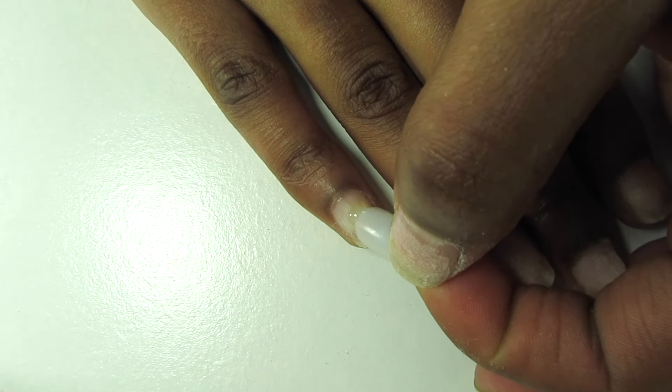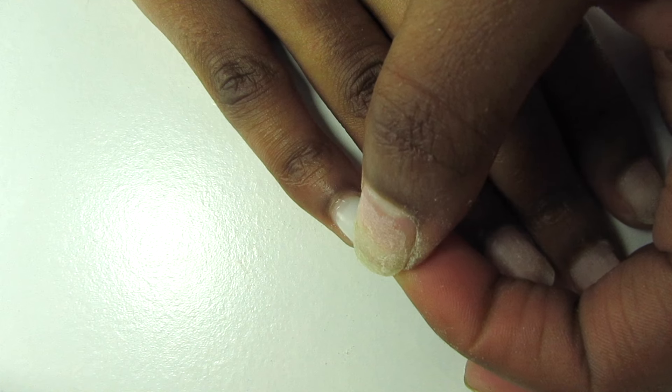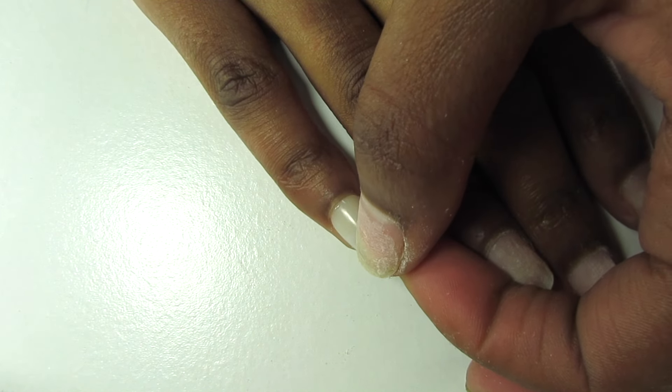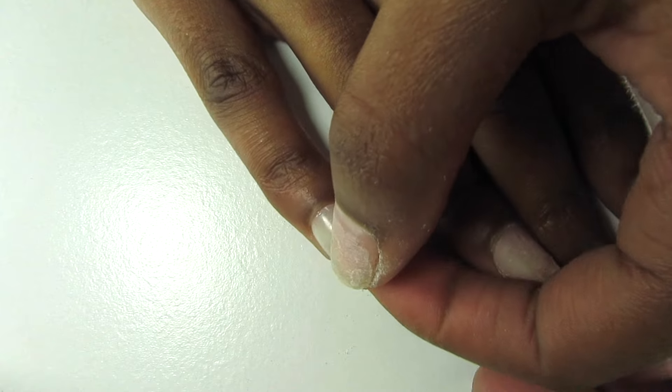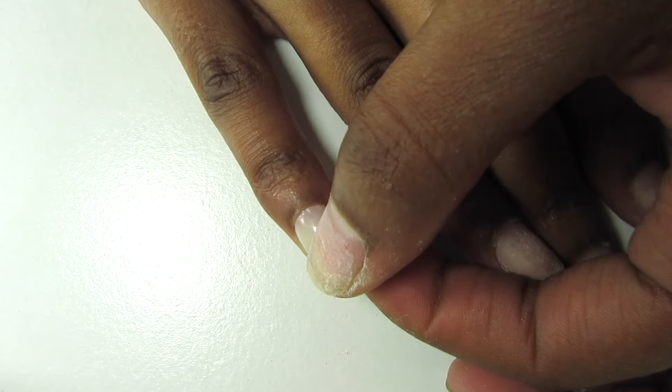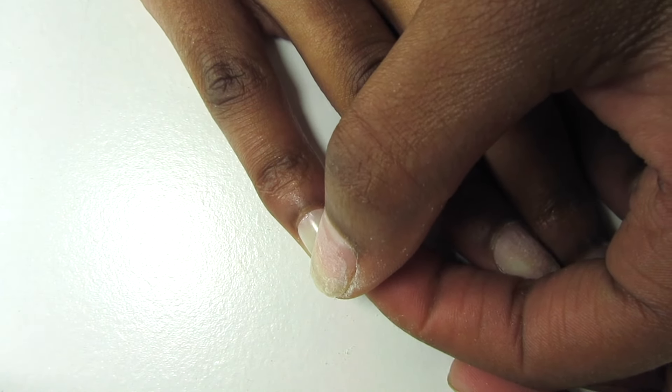Then I like to take the nail and kind of spread that glue around with the base of the nail. Then I just kind of lay it down from the back to the tip of the nail and I hold it for about 60 seconds.